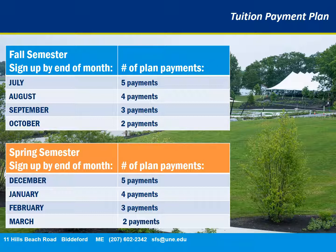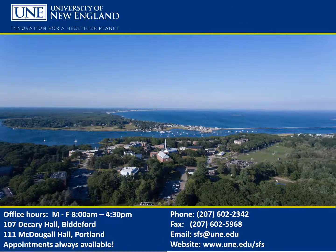Here is a breakdown of how the payment plan would work each semester. If you sign up in June as soon as you get the first bill, you would actually have five payments after the initial down payment. We hope this tutorial gave you a helpful navigation of the TouchNet billing portal. If you have any questions, please feel free to contact us.